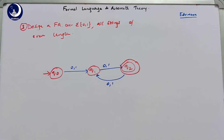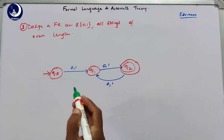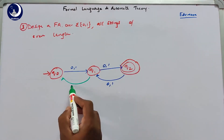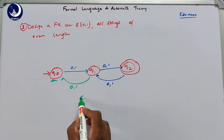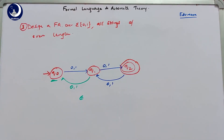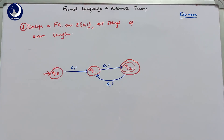We could also make q0 the final state and trace back from q1, but the issue is that it would also accept the empty string epsilon. So instead, to avoid accepting epsilon, we use the extra state q2, and the accepted lengths are 2, 4, 6, 8 and so on. This machine accepts strings with even length starting from 2, not from length 0.